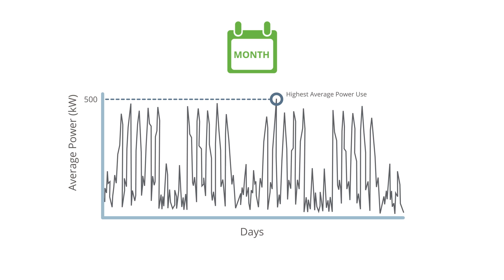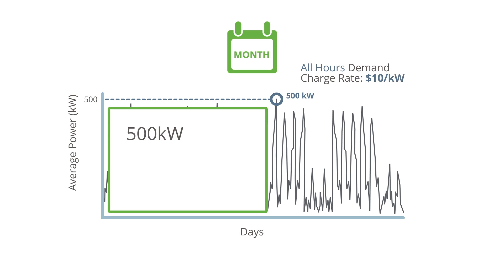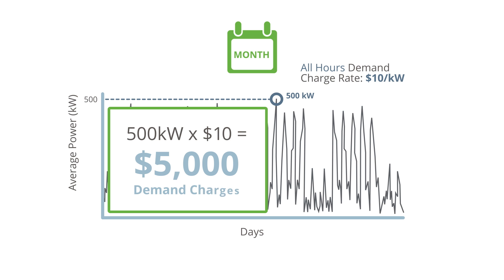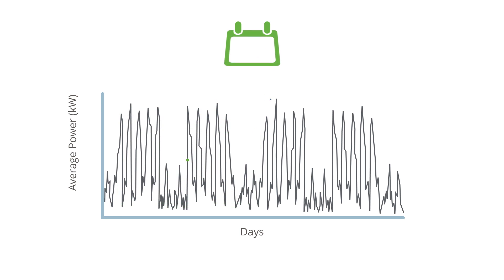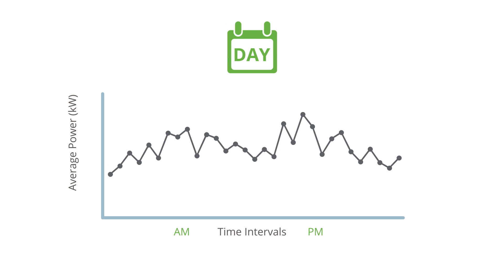It's calculated by multiplying that highest amount by an all-hours demand charge rate. If the highest average power usage within a billing cycle is 500 kilowatts and the all-hours demand charge rate is $10 per kilowatt, the customer would be billed $5,000 for all-hours demand charges that month. On top of all-hours demand charges, there are often additional charges assessed for the highest average power usage within certain times of the day. Peak demand charges, for example, are calculated by multiplying the highest average peak period power usage in a billing cycle by the peak demand charge rate.